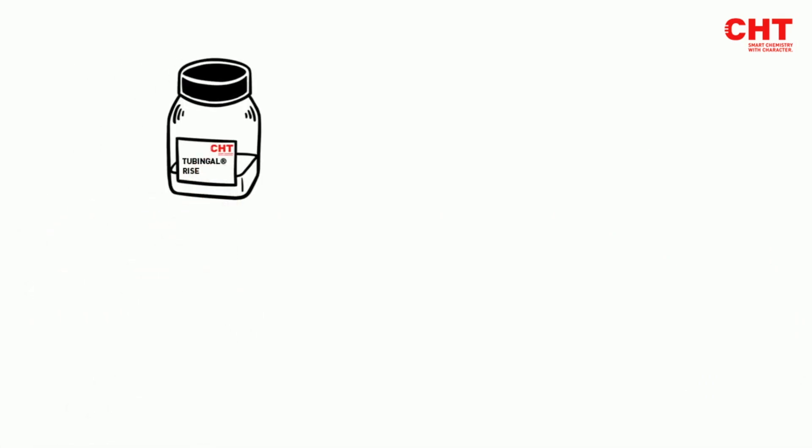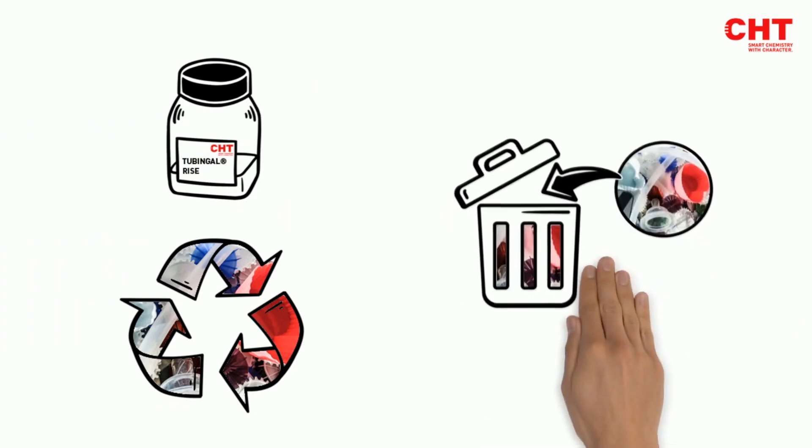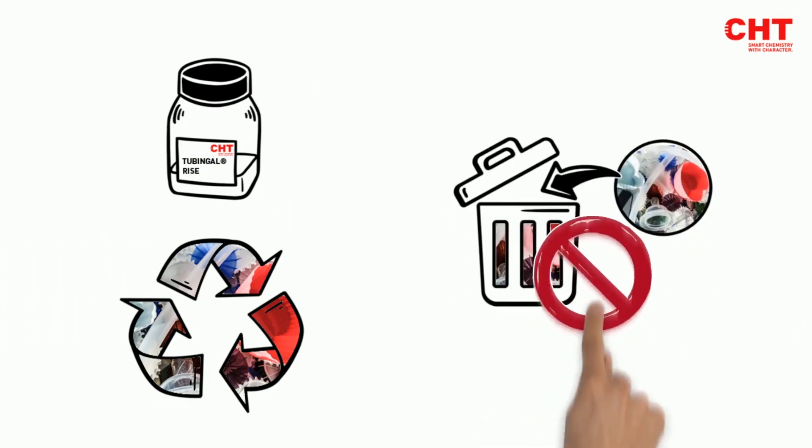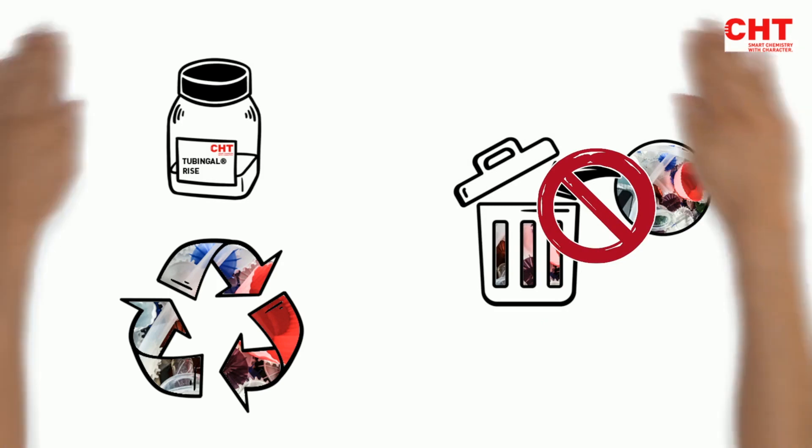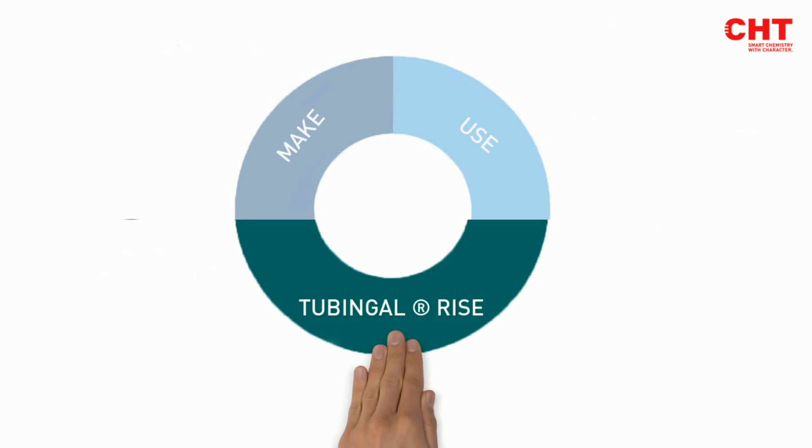Tubingol Rise is a textile softener made of recycled silicons. The traditional linear economic model with take-make-waste is broken. The circular concept behind Tubingol Rise reroutes the waste back and fully exploits the value of the resource.